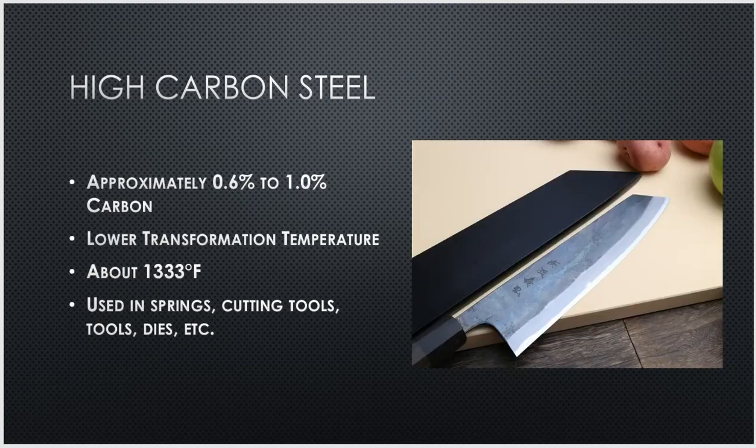And now we have high carbon steel. A piece of high carbon steel would have roughly 0.6% to 1% carbon. It doesn't sound like a lot, but it's much higher than medium and low carbon steel. High carbon steel typically has a transformation temperature that's a lot lower than the previous two — roughly around 1,333 degrees Fahrenheit. You'll typically find high carbon steel used in things like swords, axes, knives, spring steels, tools like wrenches and sockets.